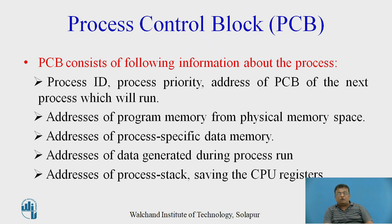The process control block consists of the following information: process ID, process priority, address of the process control block of the next process to run, addresses of program memory from physical memory space — meaning addresses of the different instructions that are part of the process — addresses of process-specific data memory, address of data generated during the process run, and addresses of the process stack saving the CPU registers.